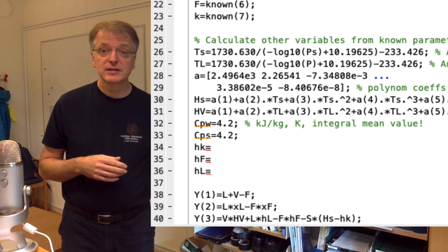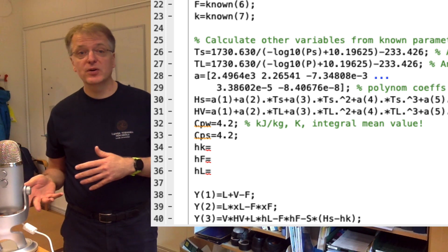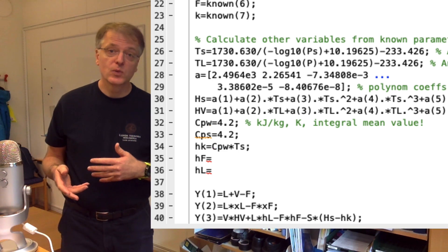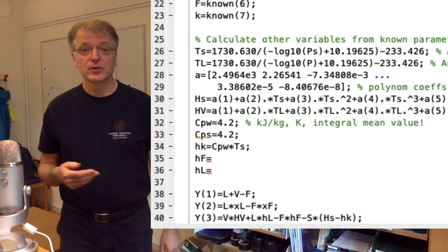Using 0 degrees Celsius as a reference temperature, the enthalpy of the condensate simply becomes Cp water multiplied with the temperature in degrees Celsius for the condensate.